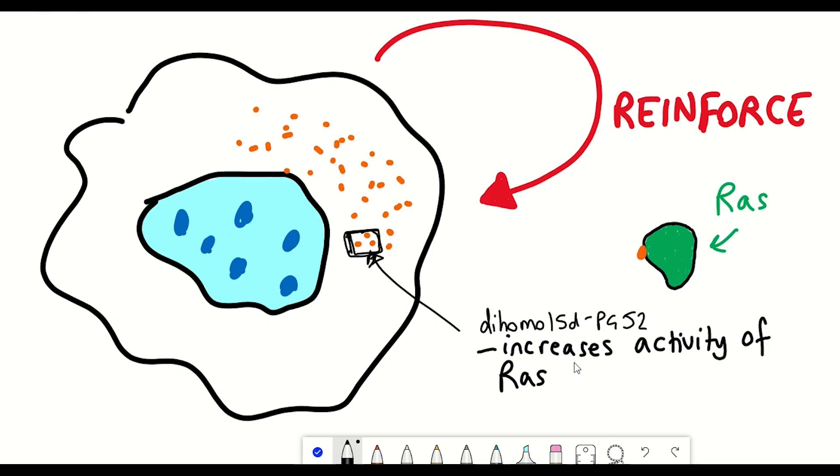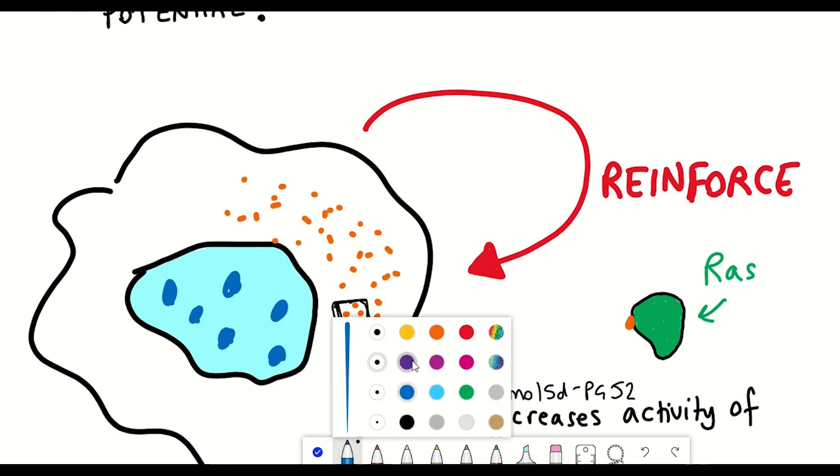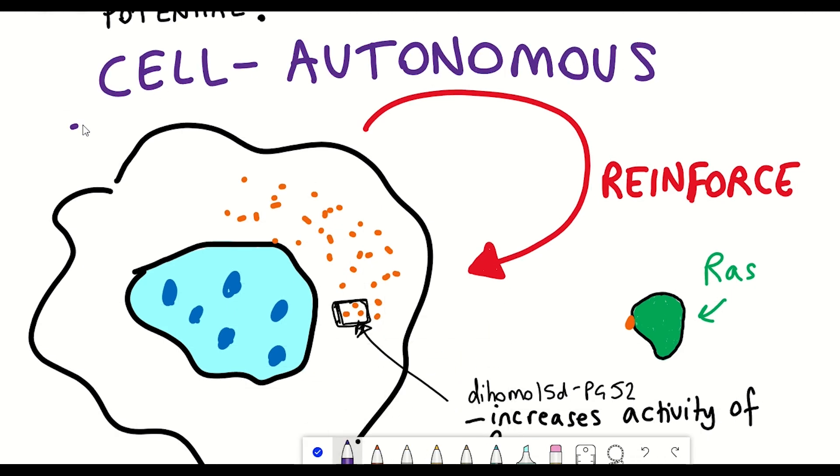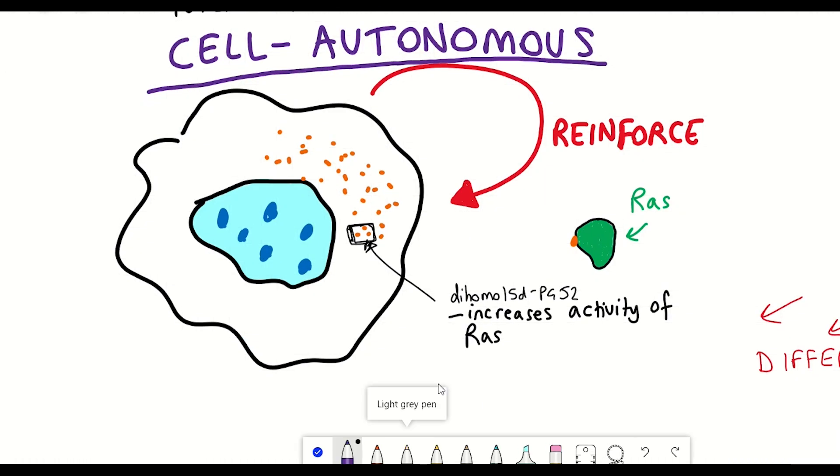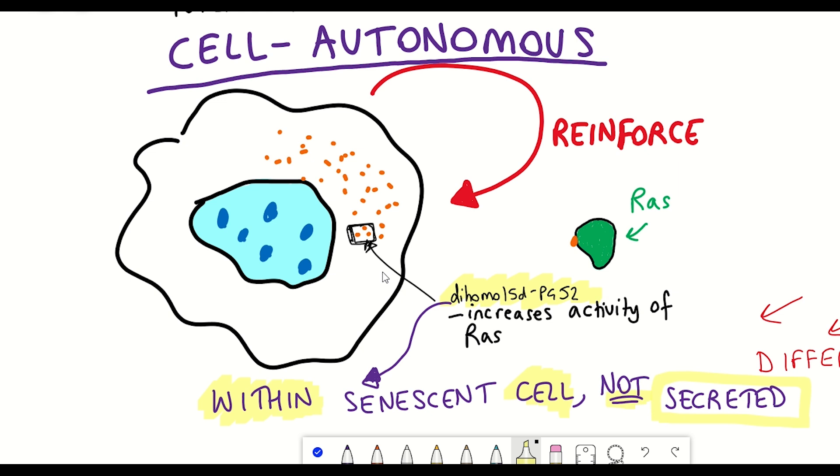And the interesting thing about this circuit is that it's so-called cell autonomous, it happens within one cell, whereby the dihomo-15d PGJ2 is acting on the RAS that's in the same cell that it's in. Basically, what I'm trying to say is that the dihomo-15d PGJ2 seems to be staying within the senescent cell. And this is in contrast to most prostaglandins that are typically thought to be secreted by the cell.